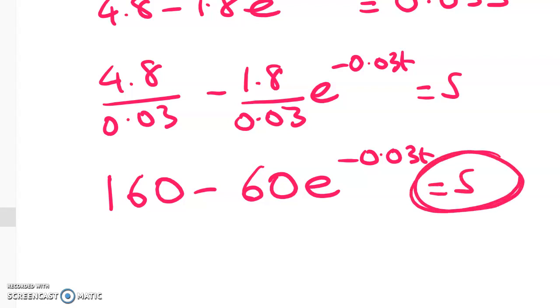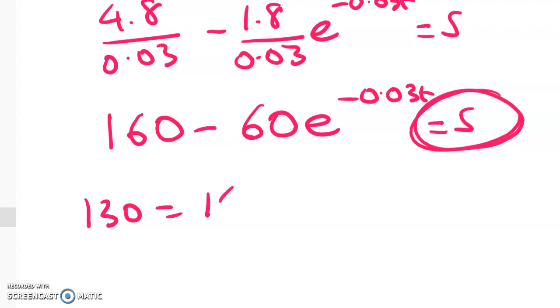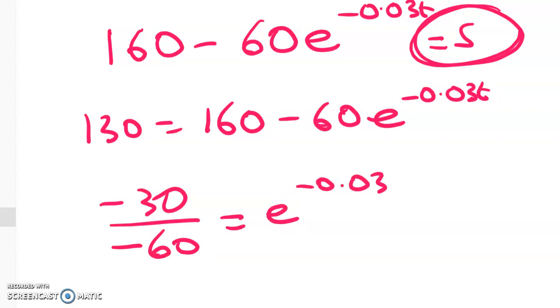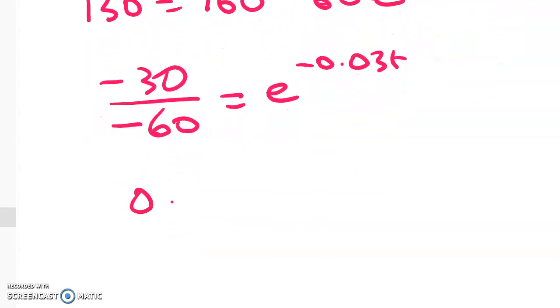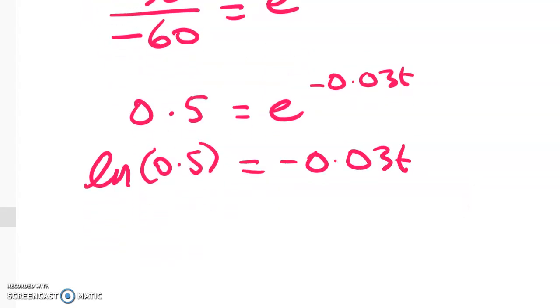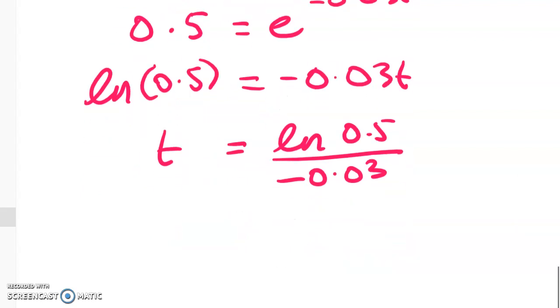Now we need to solve for when is the level of salt 130. So we get 130 is equal to 160 minus this. Negative 30 over negative 60 is equal to e to the negative 0.03T. Well, this is like doing a level 3 video now, right? So 0.5 is equal to this. Take logs of both sides. And we should end up with t is equal to, I suppose I should write the next line out, shouldn't I? t is equal to this, which is 23.1, and I think it was minutes.